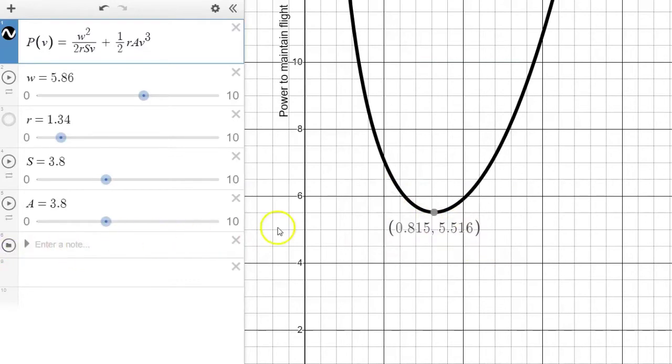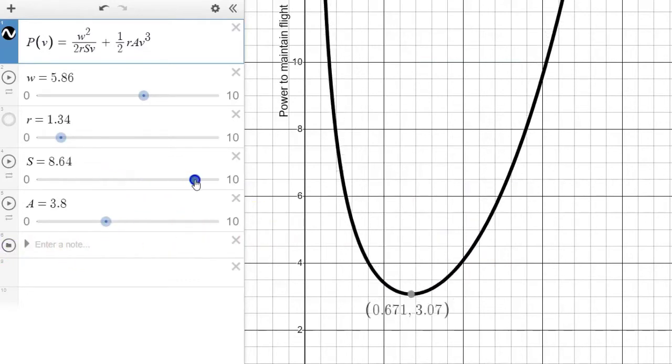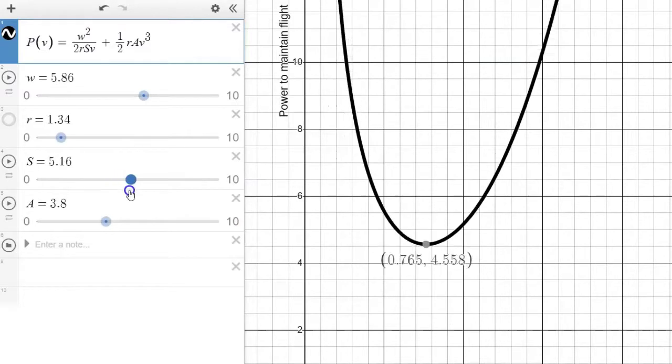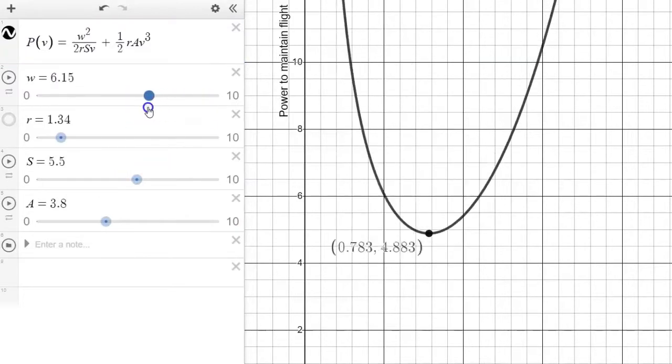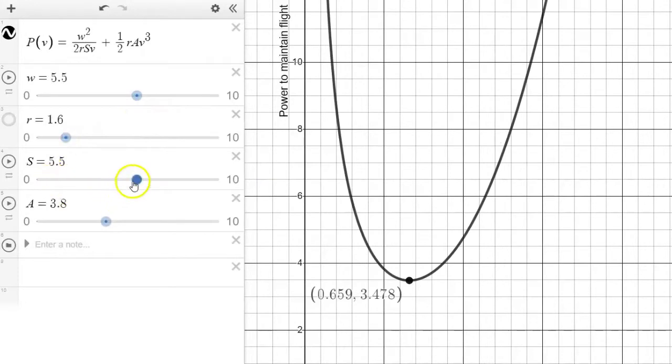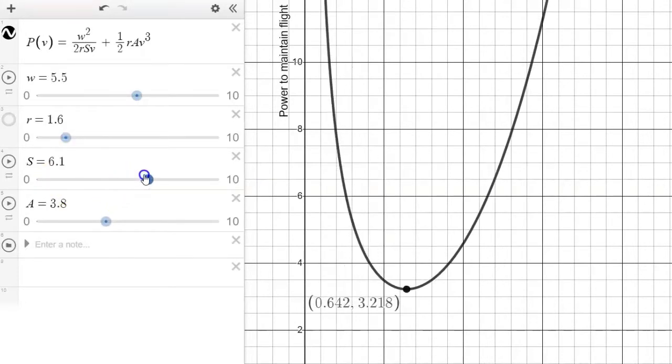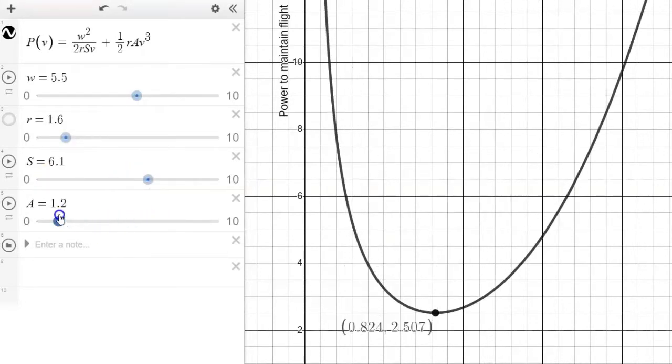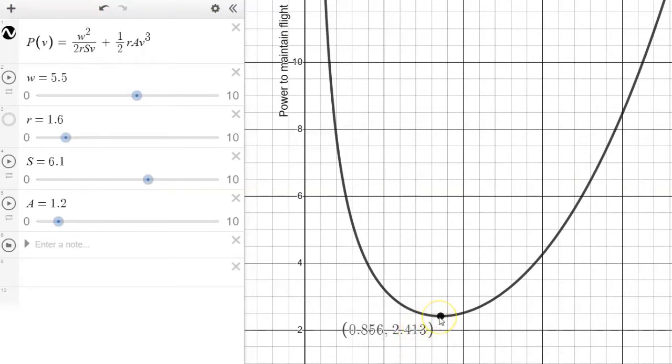Now we can see these things, just see that minimum stay on that graph no matter how I slide these different parameters. There always will be a minimum power. There will always be a certain velocity associated with that minimum power. But what is it? That's why we need calculus. So we will go to the board and we'll find out what is the relationship between relative speed and power to maintain flight in this situation.